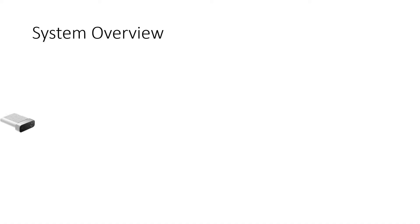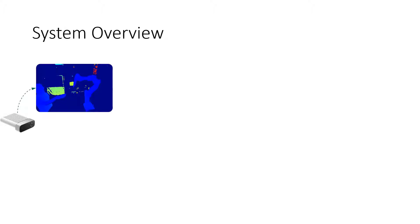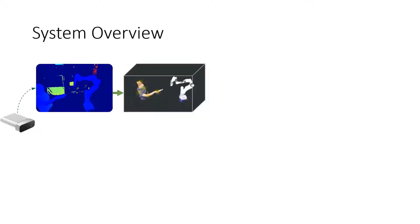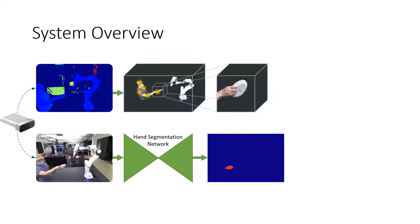Our system takes the RGBD images as input. The system first computes the point cloud from the depth image. Given the 3D human body tracking, the system crops a point cloud that only contains hand and object. Additionally, the system predicts a hand mask based on the RGB image through a hand segmentation neural network.